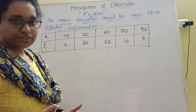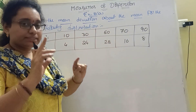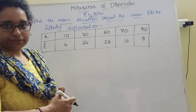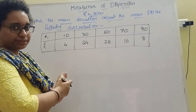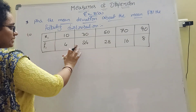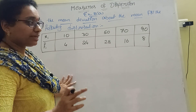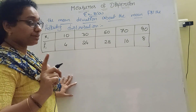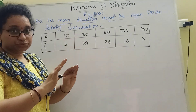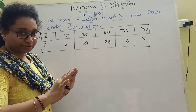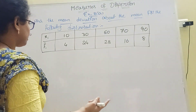Next question: mean deviation about the mean for grouped data. Here the following distribution is given — not a continuous distribution, no class intervals. Another model with class intervals will be discussed later.